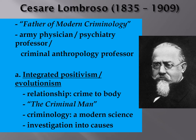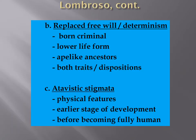Cesare Lombroso is the father of modern criminology. He was an army physician and psychiatry professor in criminal anthropology. He supported the notion of integrated positivism or evolutionism — the relationship of crime to the body. He wrote extensively about the 'criminal man,' trying to determine what makes an individual a criminal. He sought to make criminology a modern science by looking into the causes of crime. He looked at free will versus determinism — whether someone is born a criminal, considered a lower life form, closer to ape-like ancestors, covering traits versus dispositions.